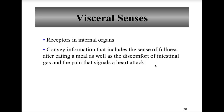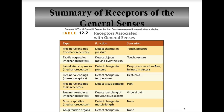Here we see the summary chart of receptors of the general senses. We'll pick up with section 12.4, which covers the special senses and lifespan changes.